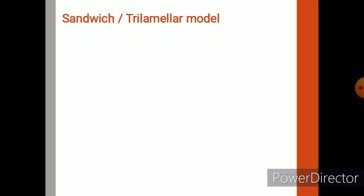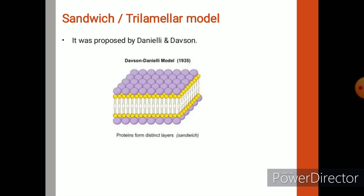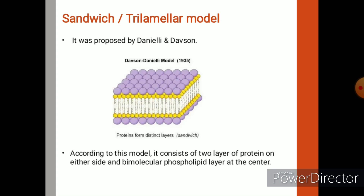The sandwich model is proposed by Danielli and Davson. According to this model, the cell membrane consists of two protein layers on either side of a bimolecular phospholipid layer. It appears as if the bilipid layer is sandwiched between two slices of proteins.